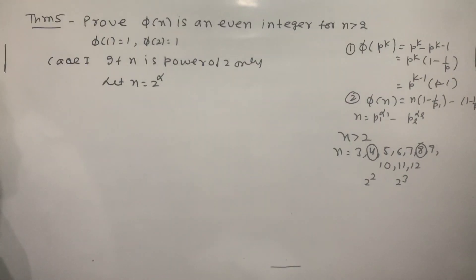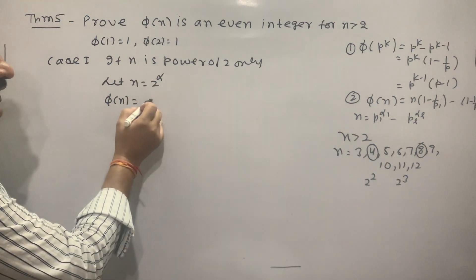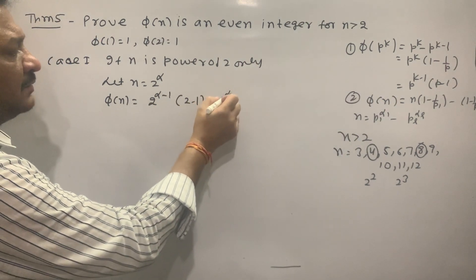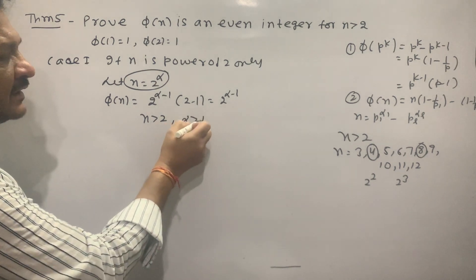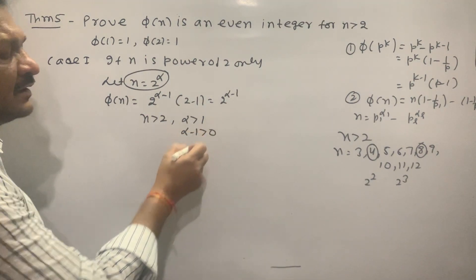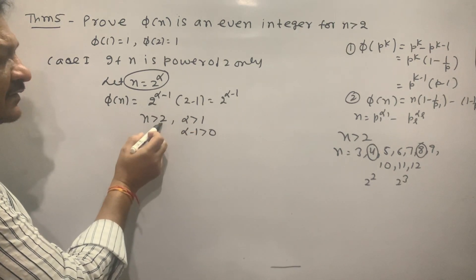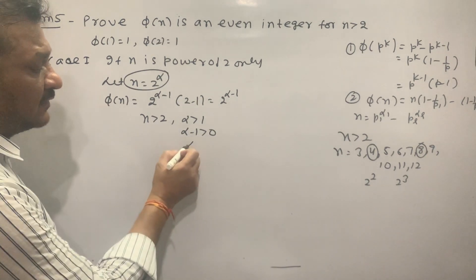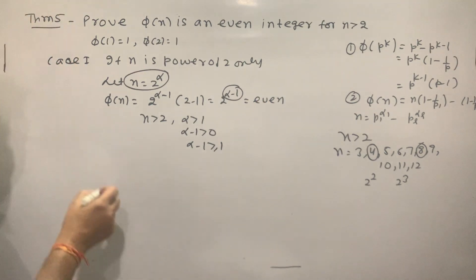Since 2 is prime, phi(n) = phi(2^alpha) = 2^alpha - 2^(alpha-1) = 2^(alpha-1) * (2-1) = 2^(alpha-1). Now if n is greater than 2, then alpha is greater than 1, which means alpha minus 1 is greater than 0 — that is, alpha-1 takes values 1, 2, 3, ... So phi(n) = 2^(alpha-1) is even.